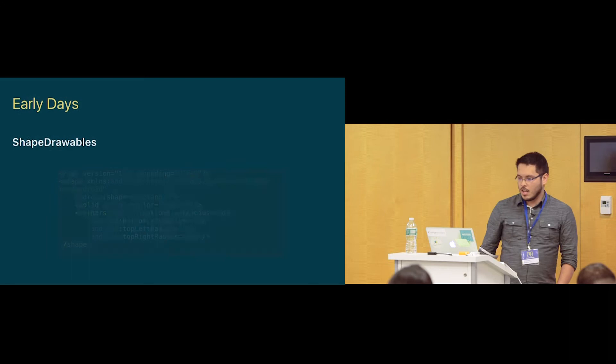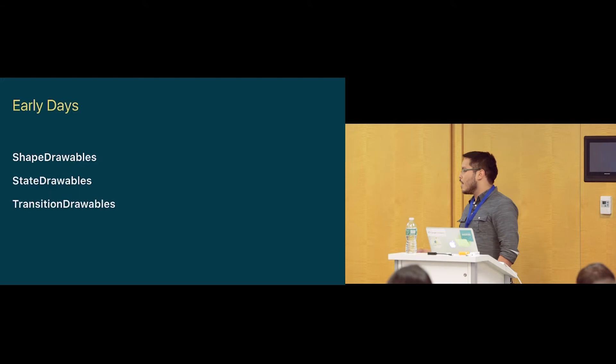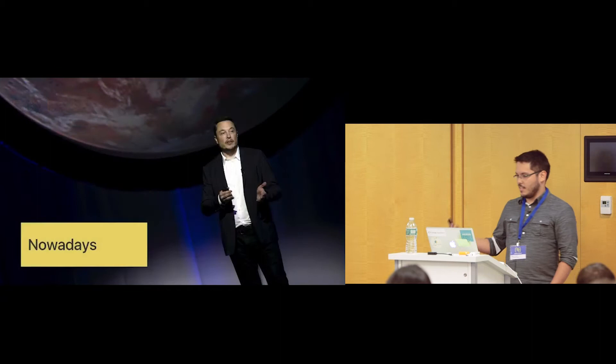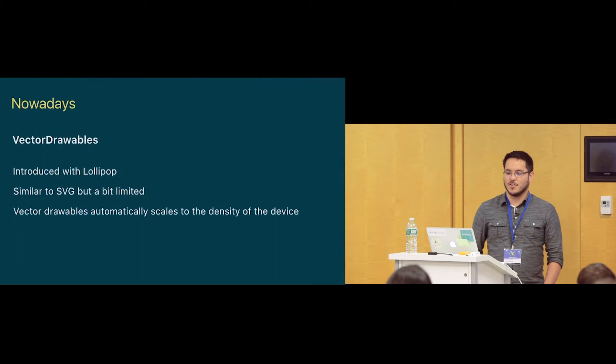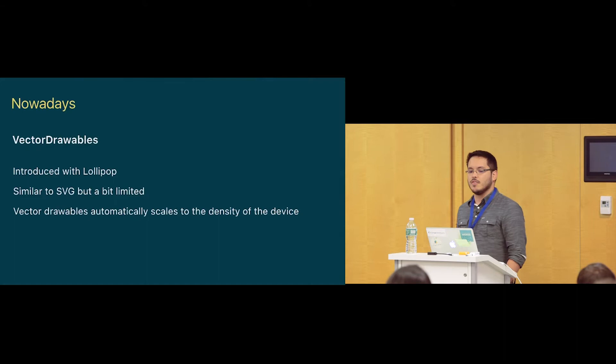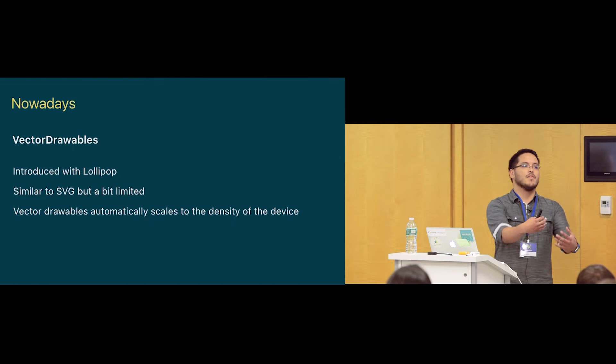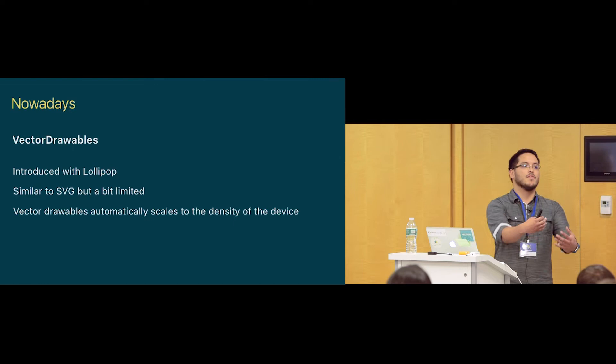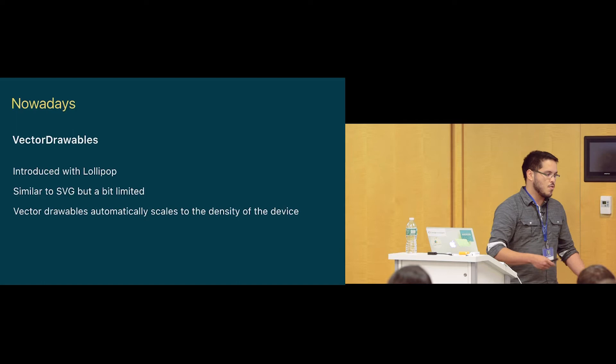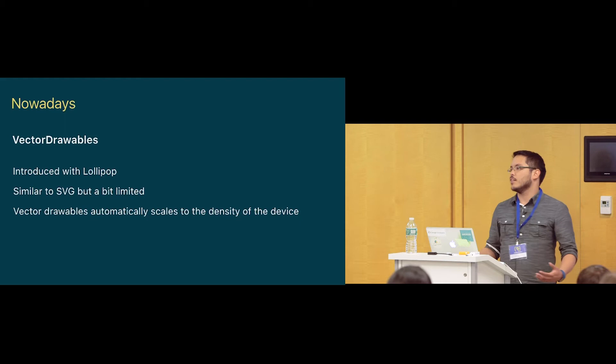We also have state drawables and transition drawables that we use every day. Nowadays we have something better — vector drawable. It was introduced with Lollipop and it's similar to SVG; actually it's based on SVG but a bit more limited, because SVG is very complex. Google said we don't need everything SVG supports — just the basics needed for icons. So they did the basic that can be done for vector drawables.